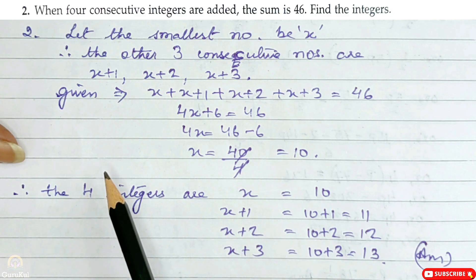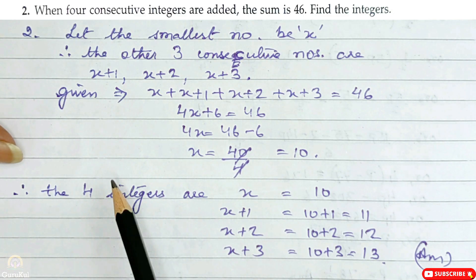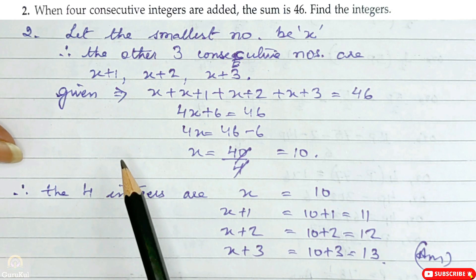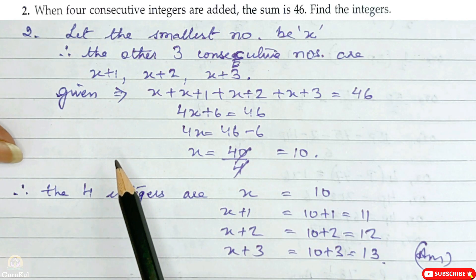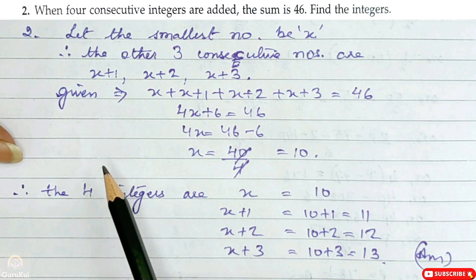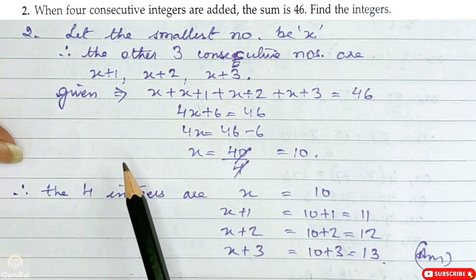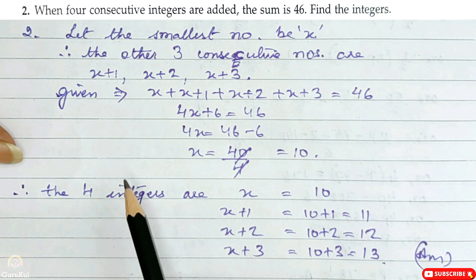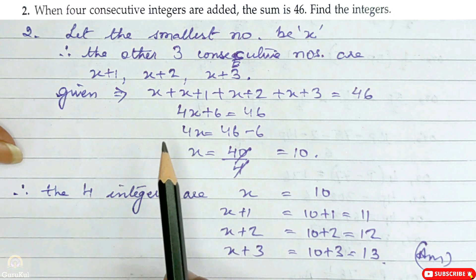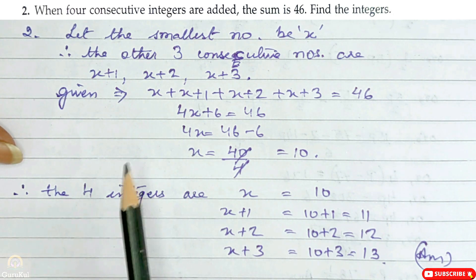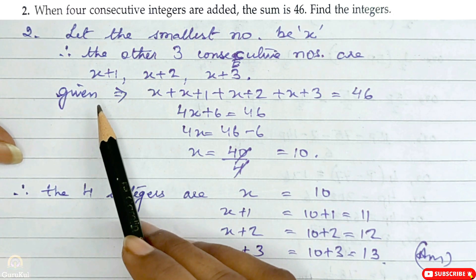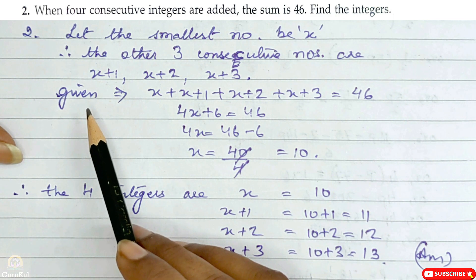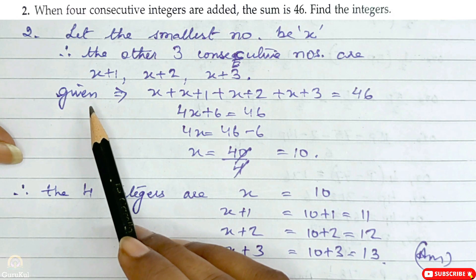Question number 2: When 4 consecutive integers are added, the sum is 46. We need to find the integers. Integers are a combination of both positive as well as negative numbers — remember that. So now let us begin with 4 consecutive integers.